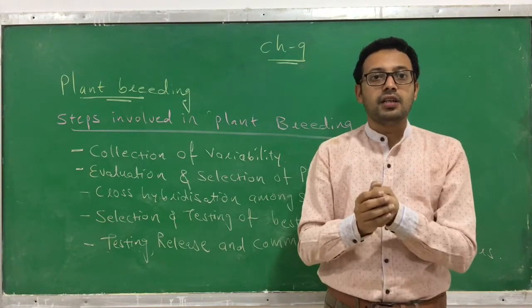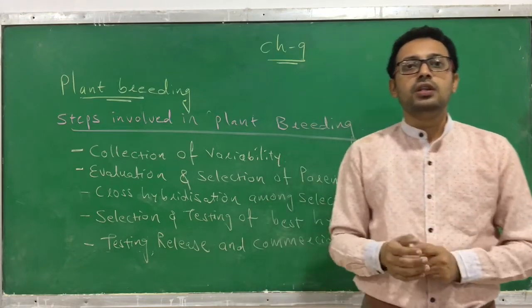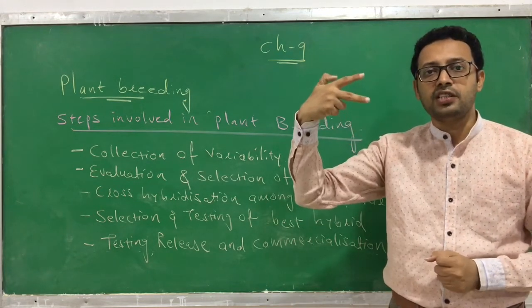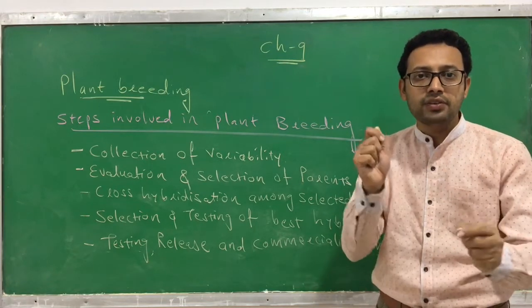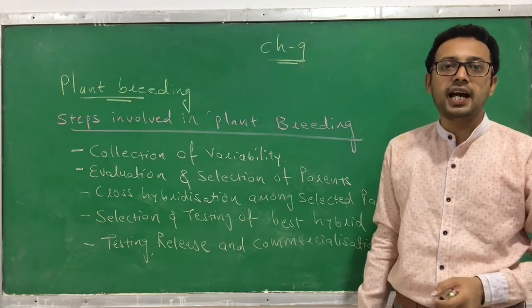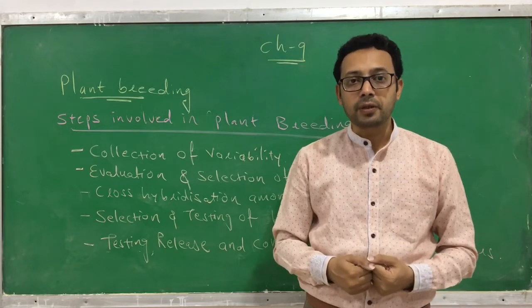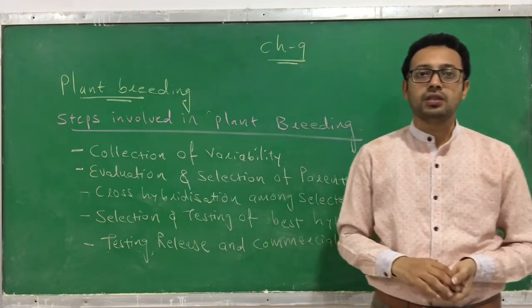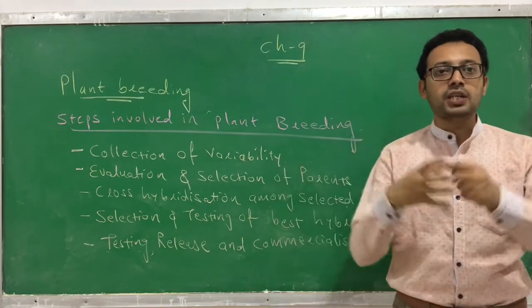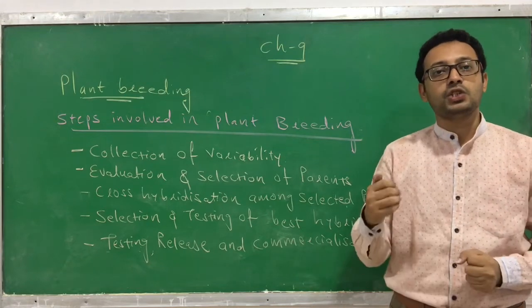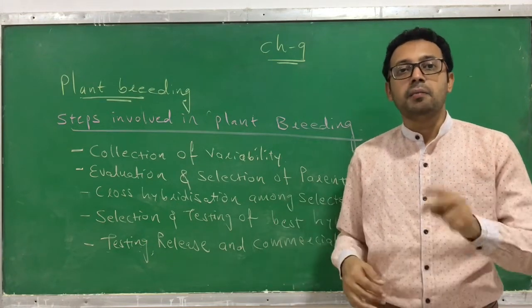However, cross-hybridization is time consuming and a tedious process in practice. You have learned artificial hybridization in chapter two — it involves two steps: emasculation, where you remove the anther, and bagging, where you apply the desired pollen. This generates some hybrids. One important thing to keep in mind: it is not necessary that the hybrid produced will have the characteristics of both parents. It might, or might not.